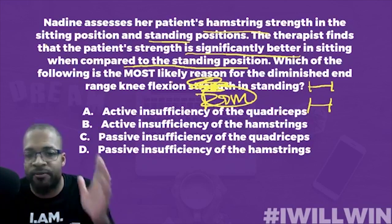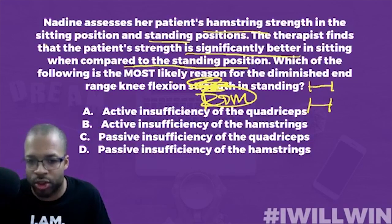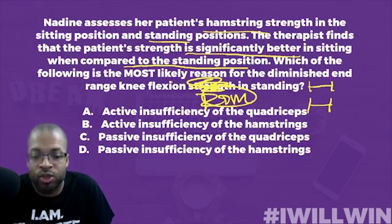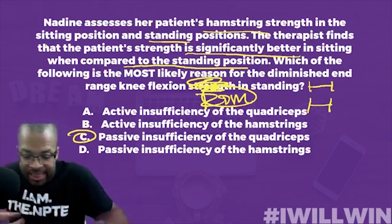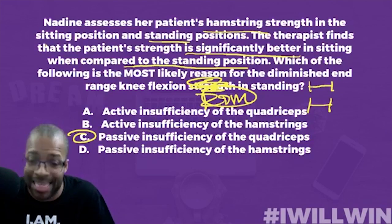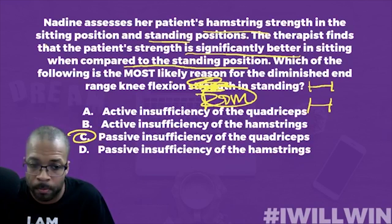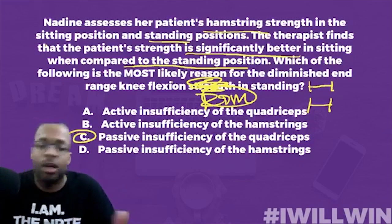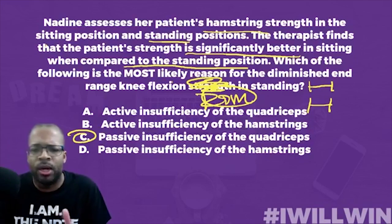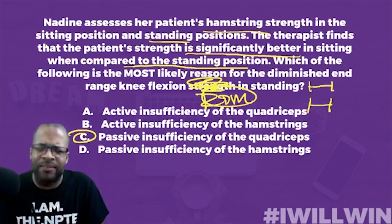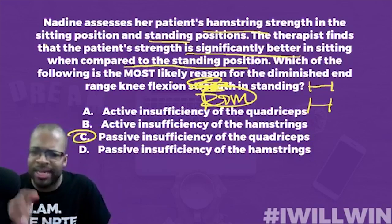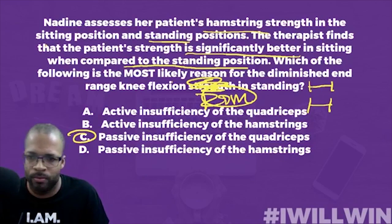Now if I switch this up and the question asks about range of motion instead of strength, the answer changes. You'd be looking for what's keeping the joint from reaching that range — passive insufficiency of the quads. The quads can't lengthen far enough to allow the knee to flex, so the answer would be C if we change it to range of motion. That's active and passive insufficiency applied both ways. Re-watch the video if needed — sometimes it takes a couple of listens before it clicks.